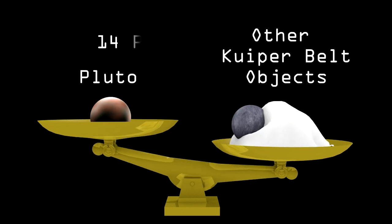On the other hand, you'd need around 14 Plutos to equal the mass of everything else in its orbit. So if Pluto isn't a planet anymore, what is it?